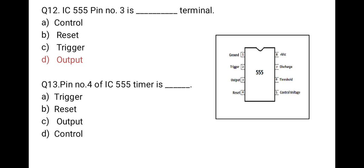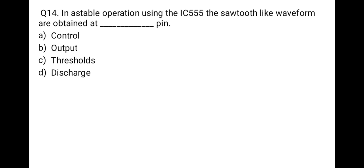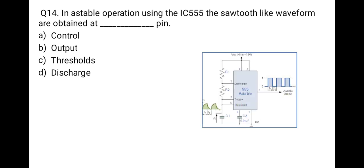The next question: pin number 4 of IC 555 timer is which terminal? The correct option is B, reset. Next question: in astable operation using IC 555, the sawtooth-like waveform is obtained at which pin? From the circuit diagram for an astable multivibrator using IC 555, the sawtooth-like waveform is obtained at pin number 6. Correct option is C.